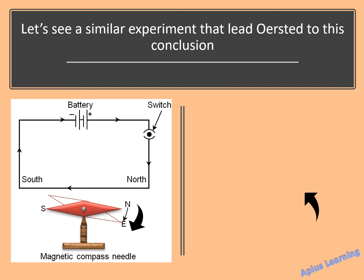The direction of the current is from north to south. When the current is from north to south, the deflection of the magnetic needle is from north to east — that means this is in a clockwise direction.